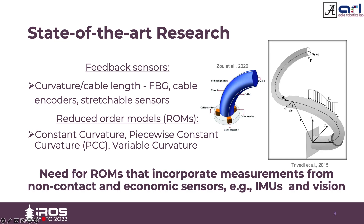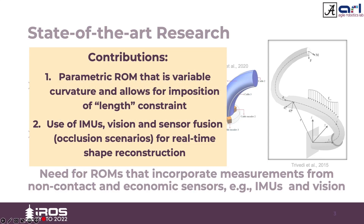There still exists a need for reduced order models that can incorporate measurements from non-contact and economical sensors like IMUs and vision. Here we contribute a parametric reduced order model that is variable in curvature and also allows for imposition of length constraints. We used IMUs, vision, and sensor fusion, which can be used in real-time shape reconstruction.